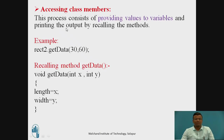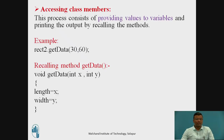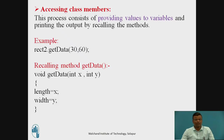The next part is accessing the class members. Accessing the class member means providing the value for the variables using the getData method. Suppose we want to calculate the area for two rectangles — we can declare the values for the variables with the help of the getData method. Here rect2.getData is recalling the getData method. 30 and 60 are the values for the variables, called as the parameter list. The general syntax is: object name dot method name in brackets with the parameter list.